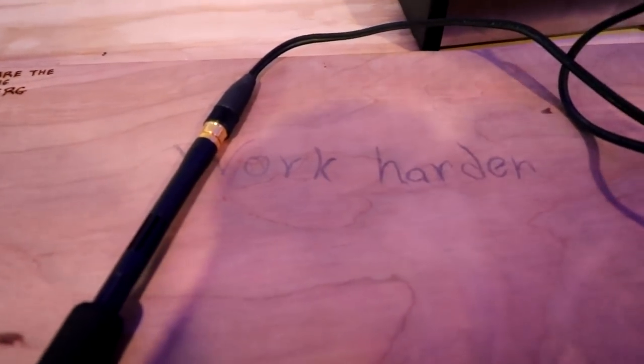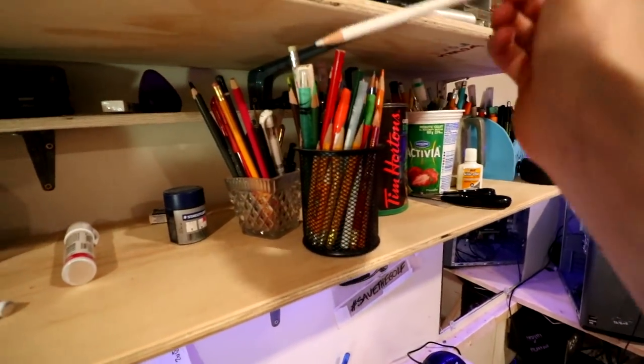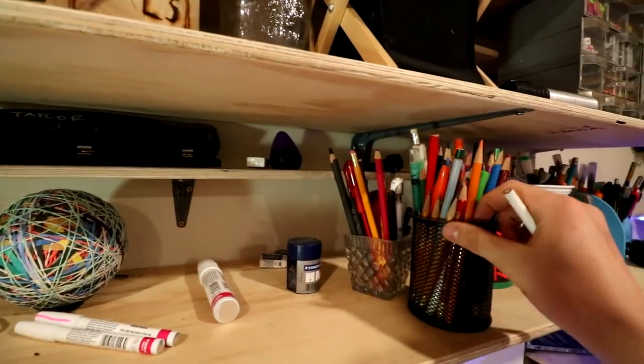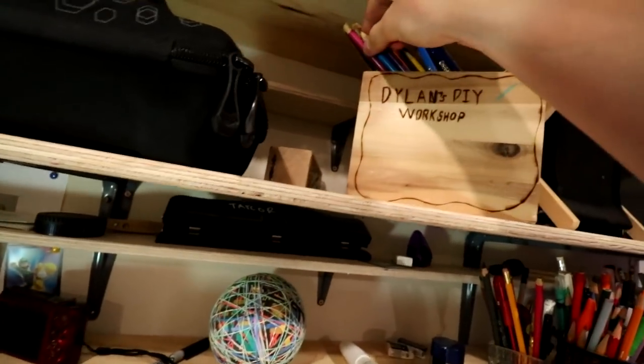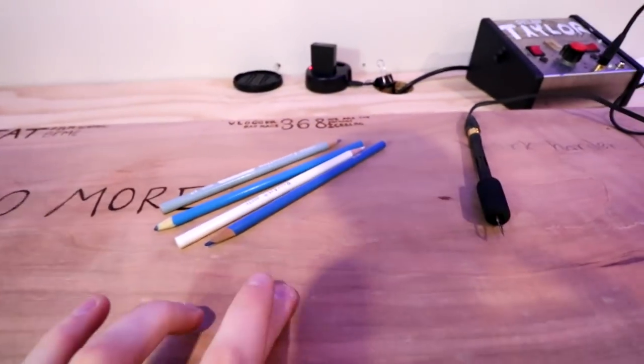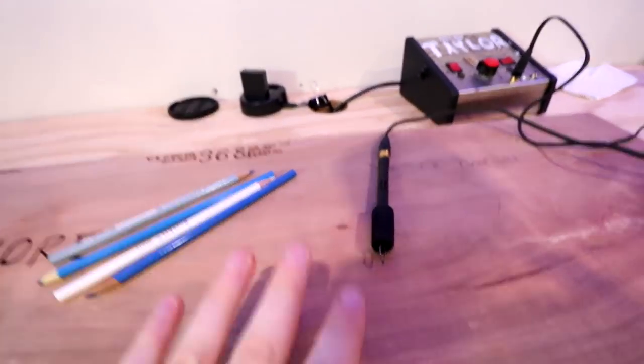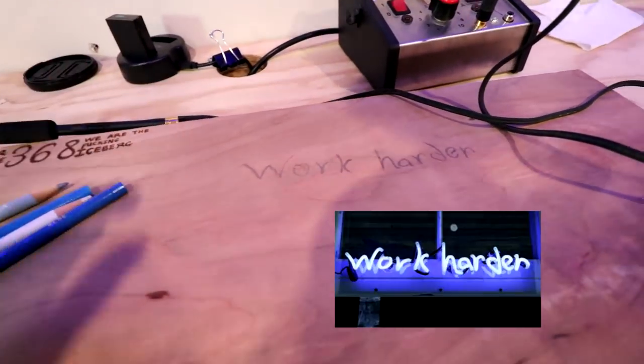This right here is what we're working on today: the work harder neon sign that he has. We're gonna grab a white pencil crayon and also a light blue pencil crayon. I don't know if this is light enough so we'll grab this one as well. We're gonna need those and a wood burner, and that should be it. I've drawn this on to look very similar to the actual neon sign.